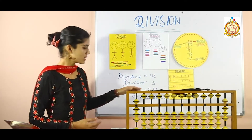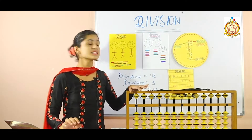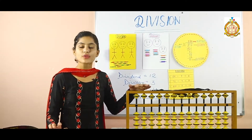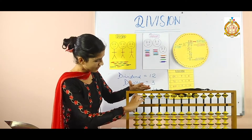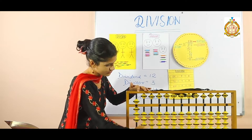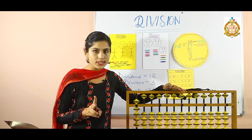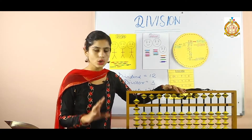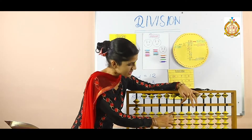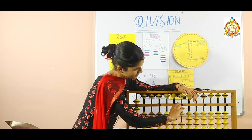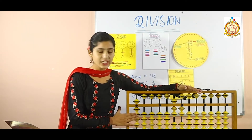Let us try another example. Clear the abacus scale. The second sum is 72 divided by 9. Divisor is 9 — the number with whom we want to divide. So 9 is added (5 plus 4 is 9). Our dividend is 72, which contains 2 digits — 7 will come on the tens place and 2 will come on the units place. 2 is here and 7 is here. 72 is added. Our divisor is 9 and dividend is 72. We need the quotient.